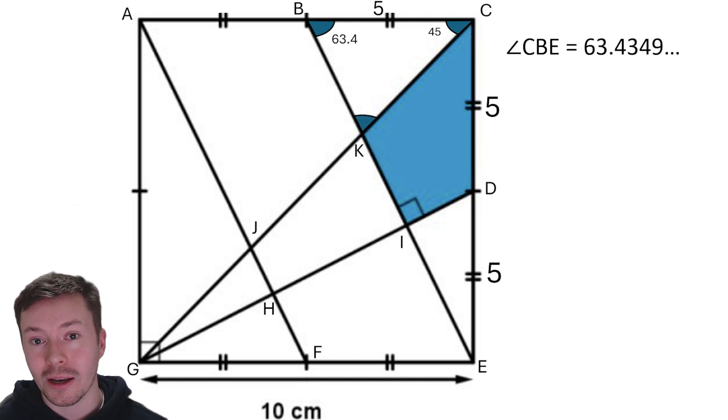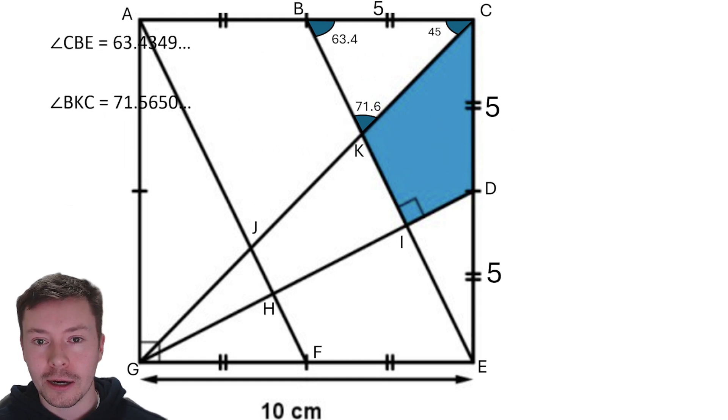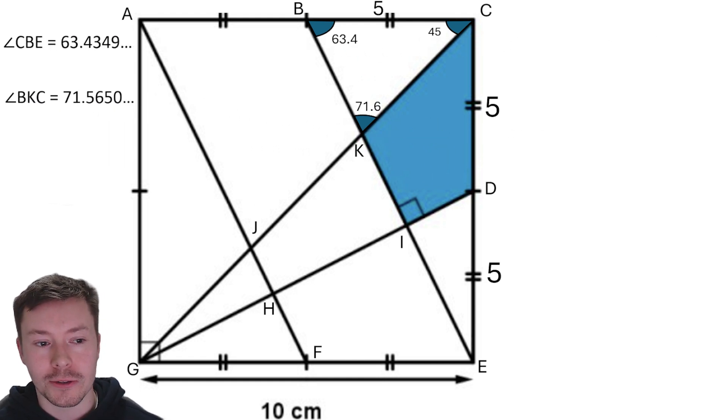So like I say, I'm going to put 63.4 on the diagram, but I am going to be using exact values in all of my calculations. Now I can then work out the angle at K, B, C. And that's pretty easy because it's 180 minus 45 minus the angle I've just worked out. That gives an answer of 71.5650. And I'm going to put that on the diagram. I'm going to put these angles over to the left hand side just to keep them away and free up some space.